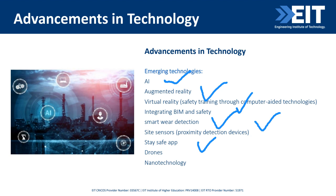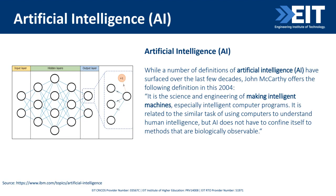Smart wearable detection involves wearable devices that monitor vital signs and environmental conditions in real time, providing early warnings to help prevent accidents. Site sensors such as proximity detection devices enhance worker safety by alerting them when they are close to hazardous areas or moving equipment. Stay-safe apps provide workers with instant access to safety information, reporting tools, and emergency notifications. Drones offer a bird's-eye view of worksites, enabling efficient inspections, monitoring, and documentation of potential safety risks. Nanotechnology involves the use of tiny particles to improve material properties, including enhanced protective gear and improved smart wearable devices.